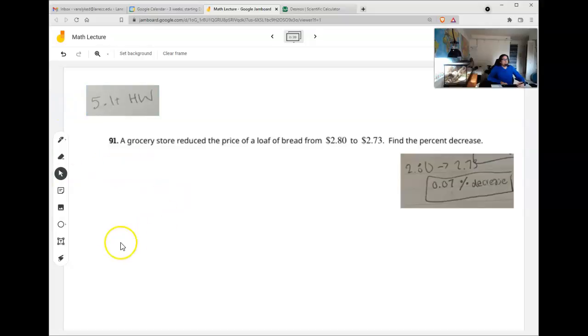So a grocery store reduced the price of a loaf of bread. Find the percent decrease. You correctly started with a subtraction. 280 minus 273 is 7 cents. But that's not the percent of the decrease. That's just how much it went down. That's the dollar amount of the decrease.